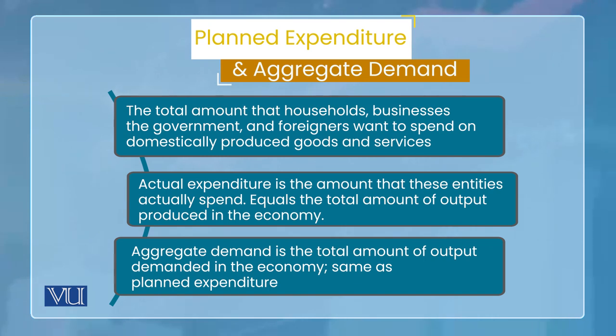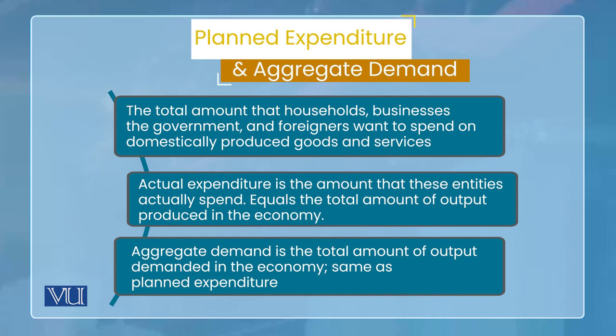उसमें हम ये देखते हैं कि एक planned expenditures होते हैं, एक actual expenditures होते हैं। जो planned expenditures हैं वो intentions हैं — कि हम इतने expenditure करें, हम ये goods and services purchase करें। ये आपके private consumers का plan होता है, businesses का होता है, government का होता है, और foreigners का होता है। जब ये expenditure actually हो जाते हैं तो हम उन्हें actual expenditure कहते हैं। तो aggregate demand है total planned expenditures — given market prices पर — उसे aggregate level पे देखें तो वो इस economy की aggregate demand है।